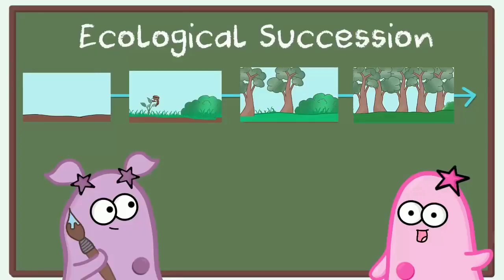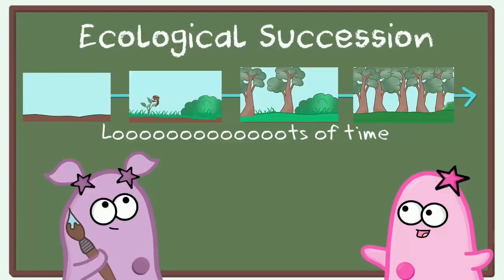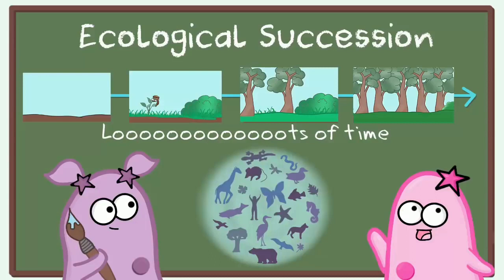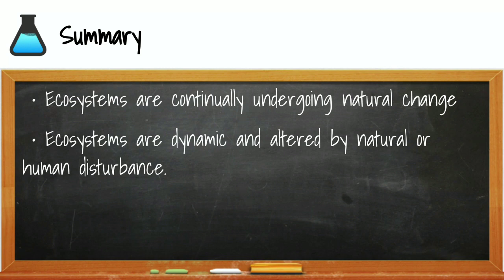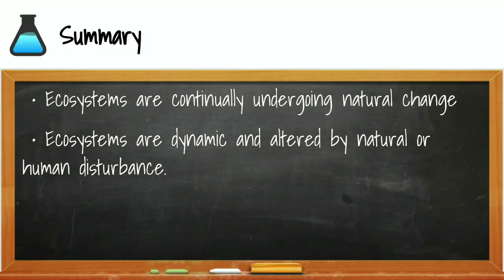This concludes lesson number eight. Remember that ecosystems are constantly undergoing natural change. Ecosystems are dynamic and can be altered by nature or humans. Altering ecosystems can positively and negatively affect biodiversity. Biodiversity ensures that ecosystems can survive in a changing environment. Make sure you've taken good notes, post your notes on Google Classroom, and complete your Google Form. I hope to see you in office hours soon!